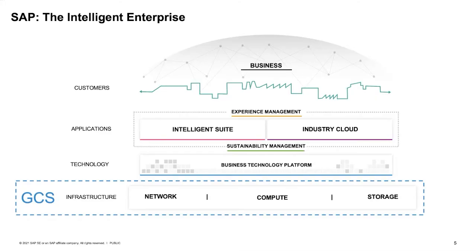Back to SAP as the intelligent enterprise. GCS, Global Cloud Services, is the foundation layer — network, compute, and storage make up the infrastructure, private cloud networks that we run. On top of that, we have our business technology platforms, our intelligent suites and industry clouds, which cater to our application layer and industry-specific solutions. We have our customers and business network, and encasing all that, we have experience management and user experience, which is at the top of our forefront.